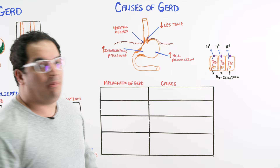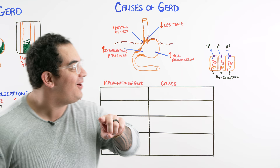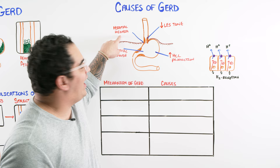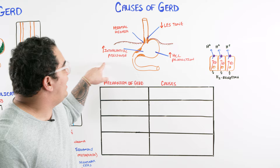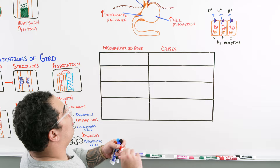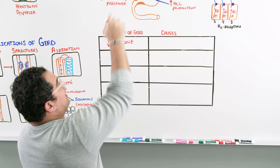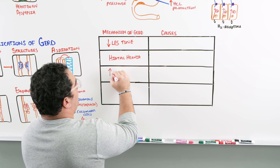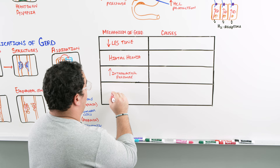So the four reasons a patient develops GERD are: decreased lower esophageal sphincter tone, hiatal hernia, high intragastric pressure, and increased hydrochloric acid production. Now let's discuss what causes each: what decreases LES tone, what type of hiatal hernia is associated with GERD, what increases hydrochloric acid production, and what increases intragastric pressure.